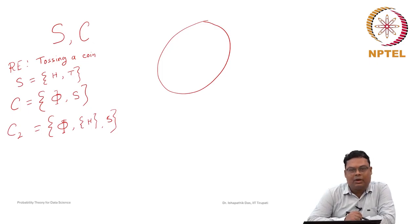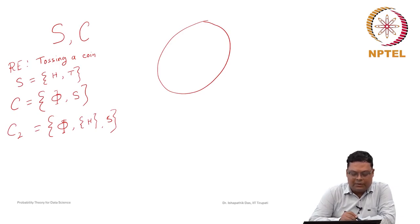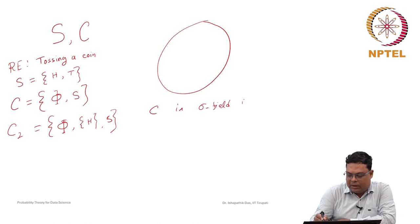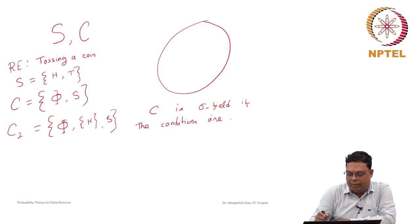A sigma field is defined as: C is a collection of subsets of S satisfying some properties. C is called a sigma field if the following properties are satisfied.